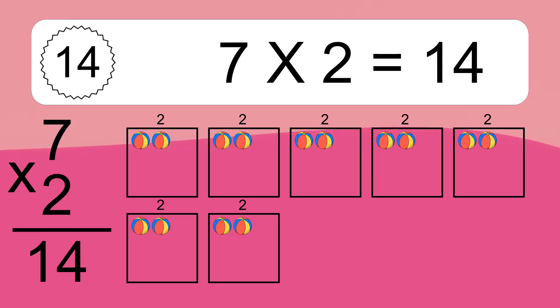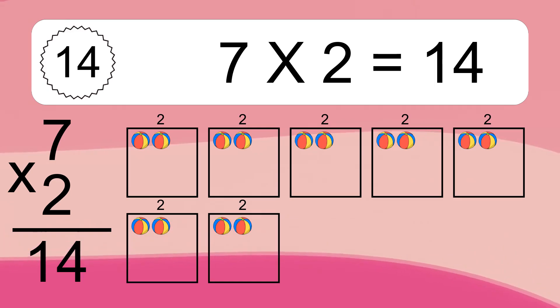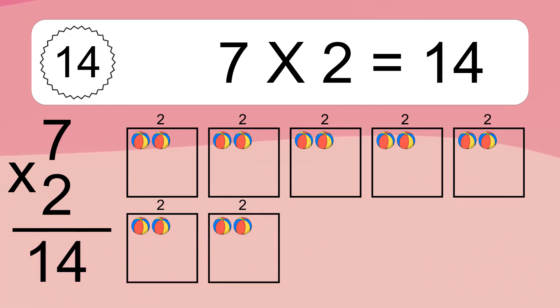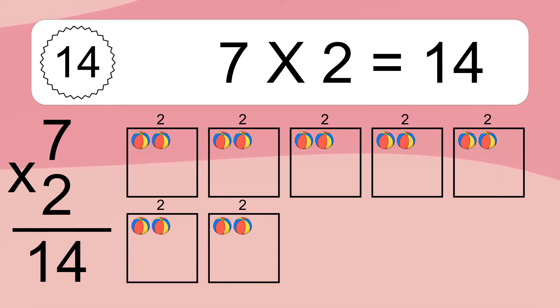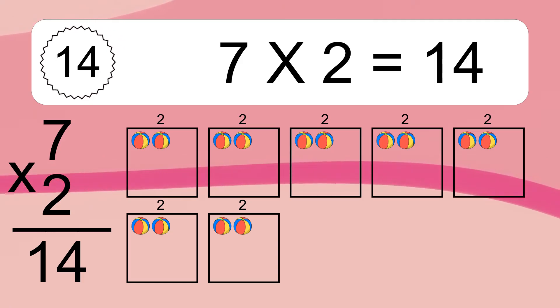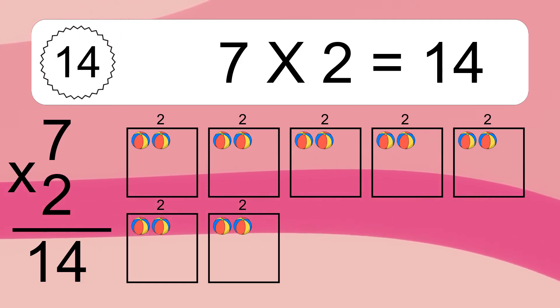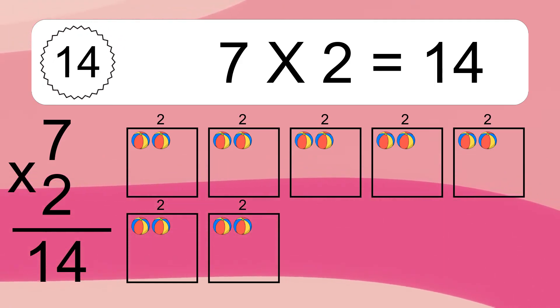7 times 2 equals 14. We have 7 boxes and each box has 2 colorful balls inside. If you count all the balls in all the boxes together, you will have 7 times 2 balls. This equals 14 balls.